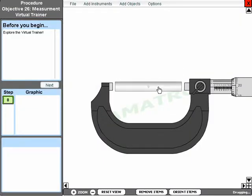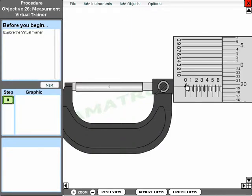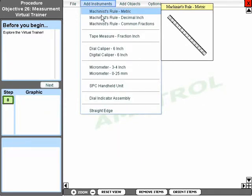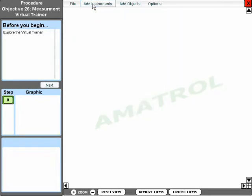More involved procedures such as this skill on reading precision instruments are presented using a virtual workspace that simulates a real-world hands-on training system typically found in a lab. The virtual workspace provides menus that allow the learner to build their own hands-on setups and manipulate components.